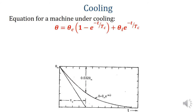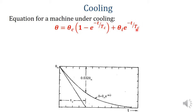If the machine is allowed to cool, a similar equation can be written: theta equals theta_c times (1 minus e raised to minus t by th) plus theta_i times e raised to minus t by tc. The equation is almost similar; only the two terms theta_c and theta_i are different, and the heating time constant is replaced by the cooling time constant.